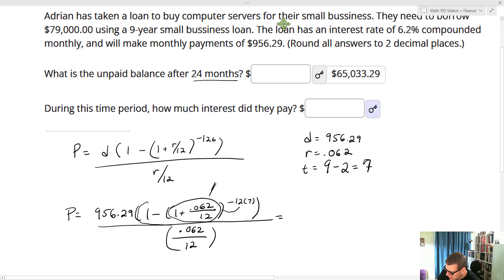So I go in, I do this inner piece first. And then I'm going to raise it to the negative 84th power. And then I take 1 minus whatever that answer is. And then I'll multiply that by 956.29, and finally then divide by 0.062 divided by 12. Essentially, I'm going to do all that inside of my calculator. And when I do, what I get is exactly what we have up here. I have $65,033.29. So that's going to be my unpaid balance after 24 months.